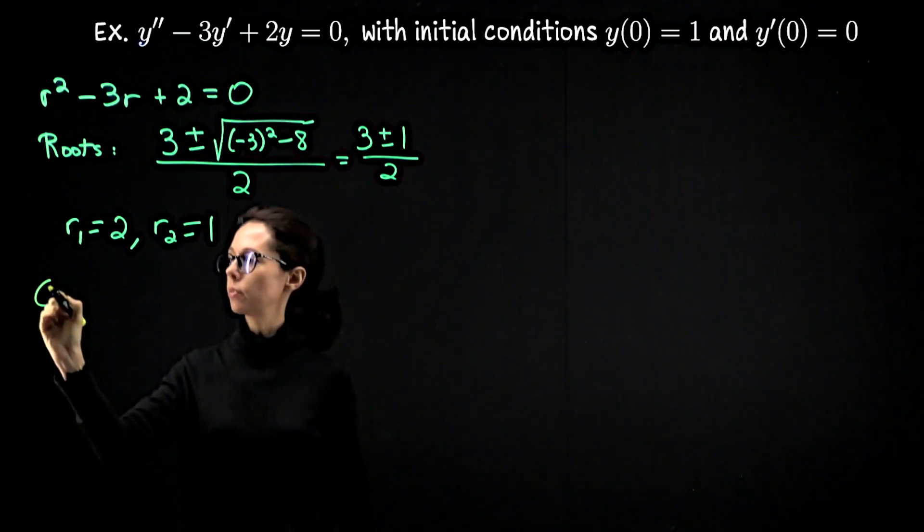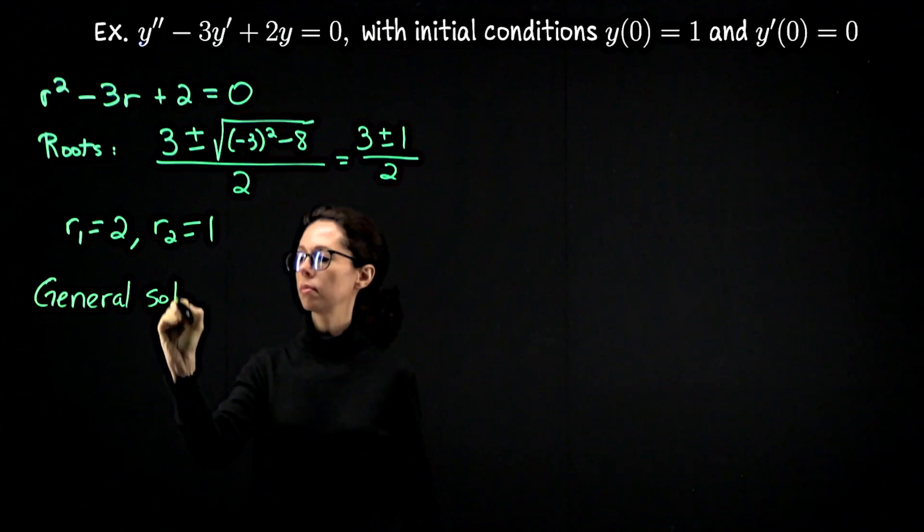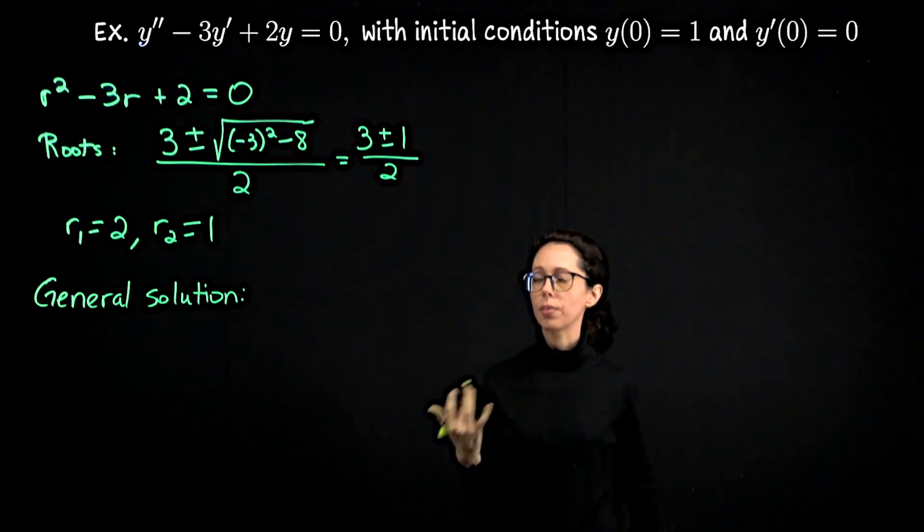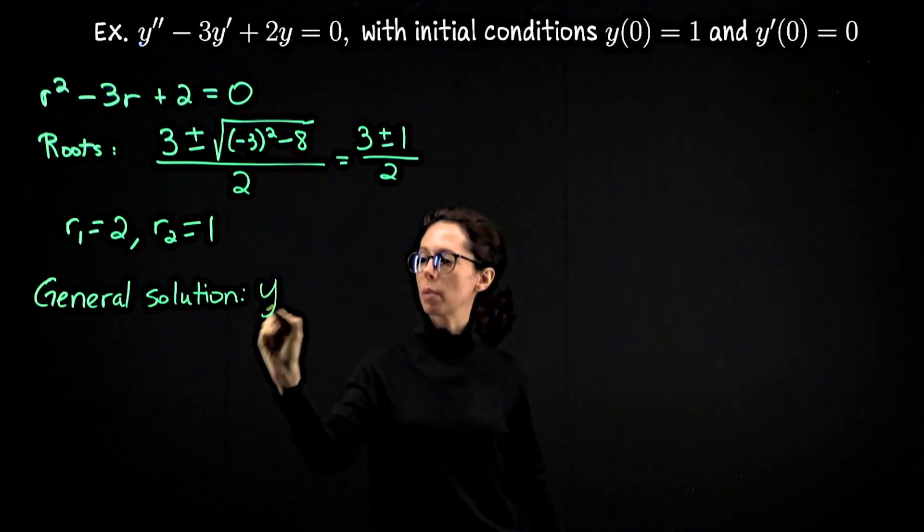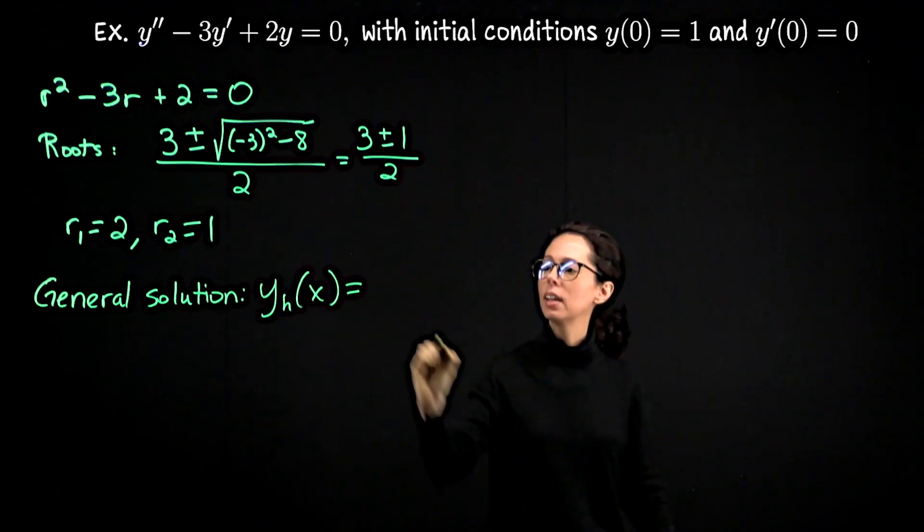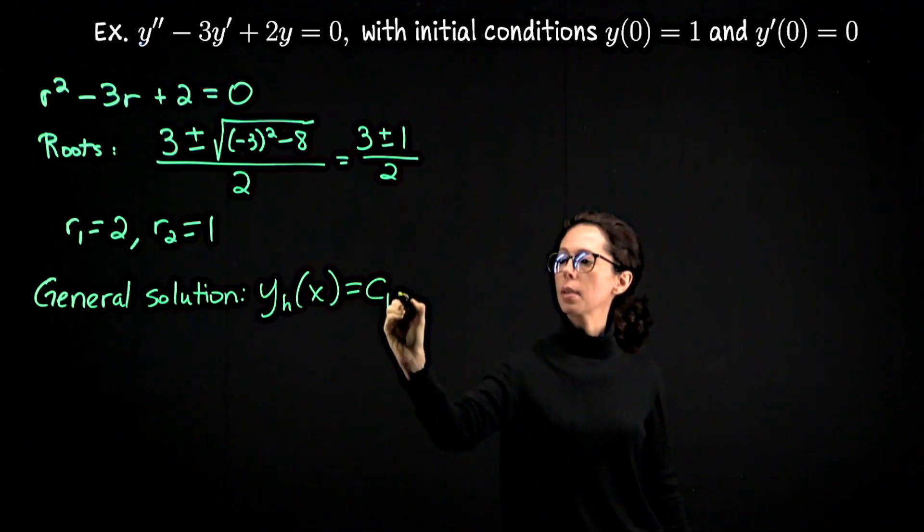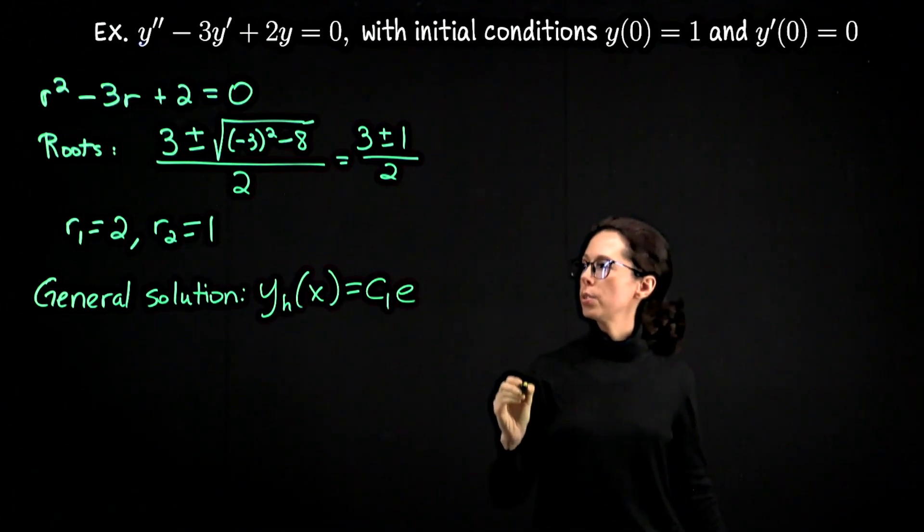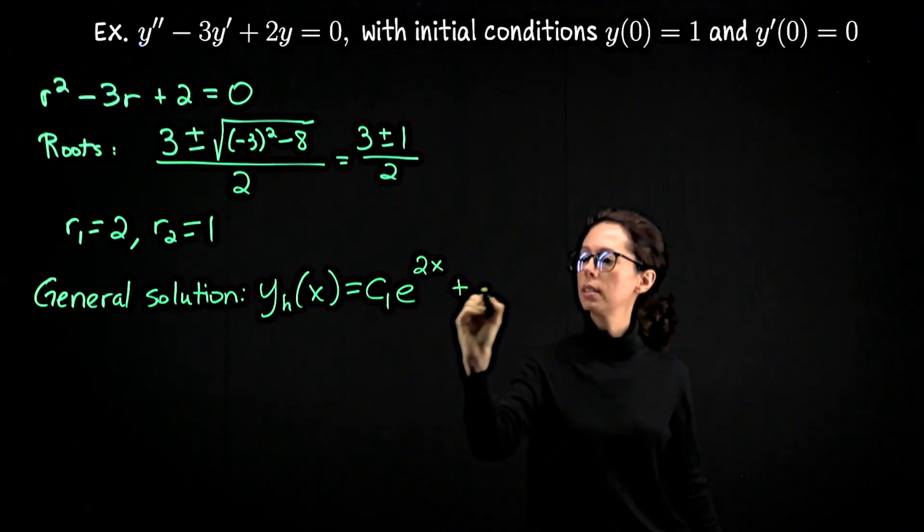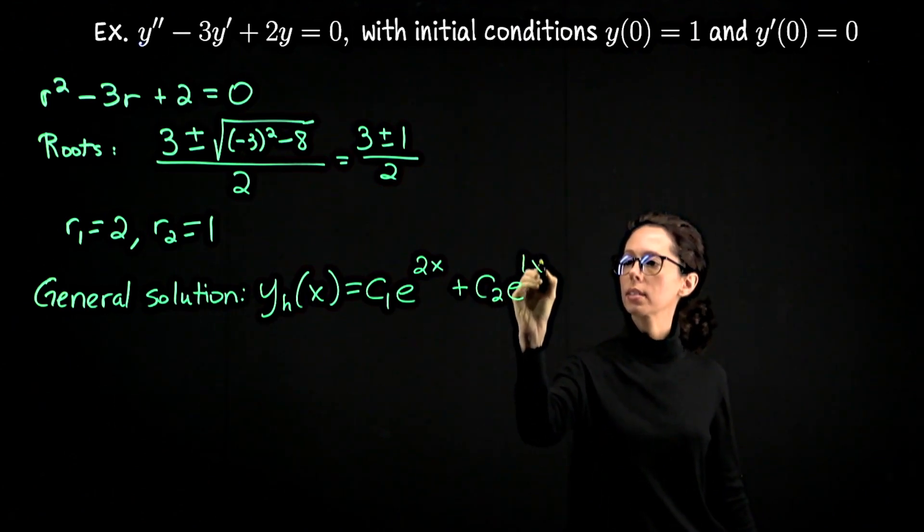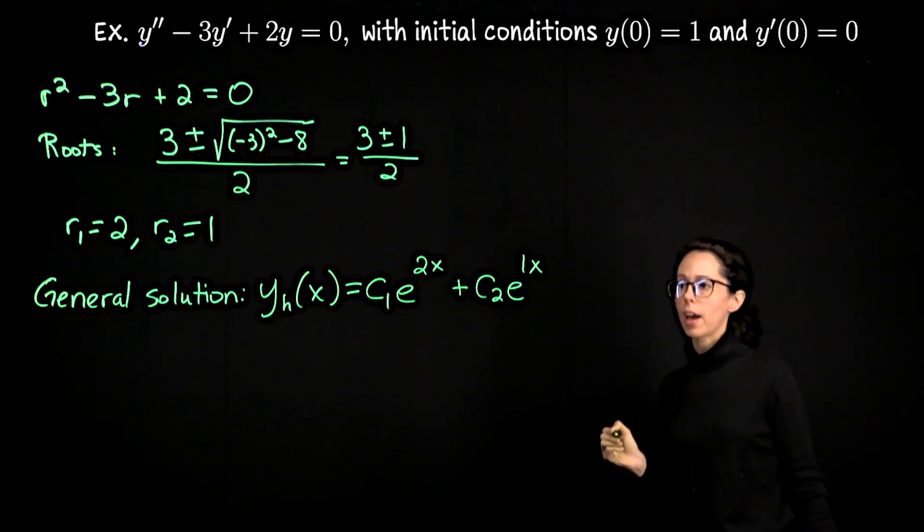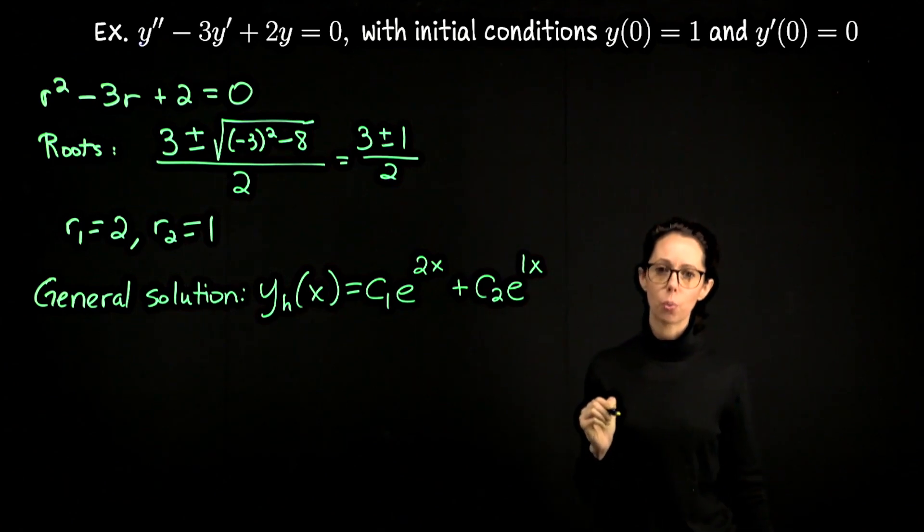We are now ready to write down the general form of solution to the second order equation on the left. So the general solution, I'm going to again use the subscript h just to say that we've solved a homogeneous problem. So y sub h, a homogeneous problem solution. It's a function of x and it's going to look like a constant, it's called c1, times e to one of these, I'll pick two first, e to the 2x, plus c2 e to the 1x. So there's the general solution. Any function that satisfies y double prime minus 3y prime plus 2y equals zero has this form.